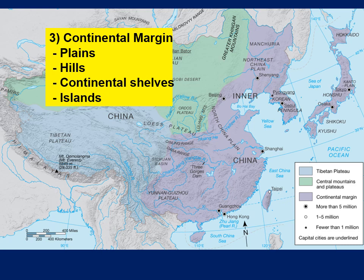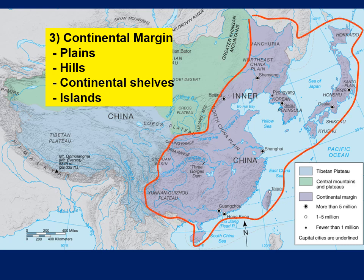Finally, we reach the last physiographic region: inner China or humid China, also known as the continental margin. The bulk of our large cities occur in this region, and most of the population lives in inner China. The continental margin features a variety of landforms — plains areas, hills, the continental shelf extending into the East China Sea and the South China Sea, as well as island regions. Elevation here is much lower, about 200 meters, sloping downward from the mountain areas toward the water.